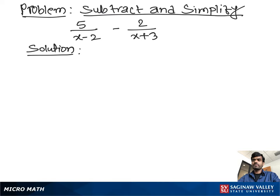Subtract and simplify 5 over x minus 2 minus 2 over x plus 3. Now, how to solve this problem? Let's try the problem: 5 over x minus 2 minus 2 over x plus 3.